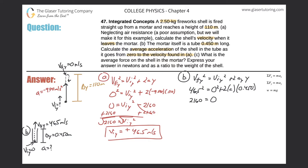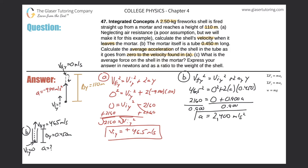So we have 2160 equals zero plus two times 0.45, which is 0.900, times acceleration a. Dividing both sides by 0.900 gives an acceleration of 2400 meters per second squared. That's the acceleration for Part B.